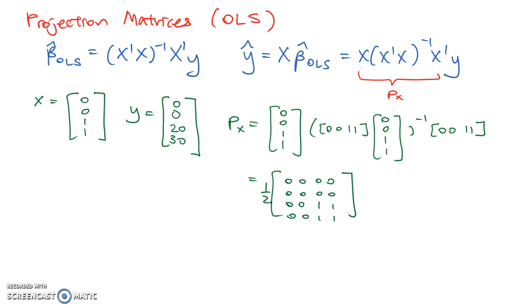So notice that Pxy is equal to half times this entire matrix. And then we further multiply it by 0 0 20 30. And when you do the matrix multiplication, you find that this is equal to 0 0 25 25.